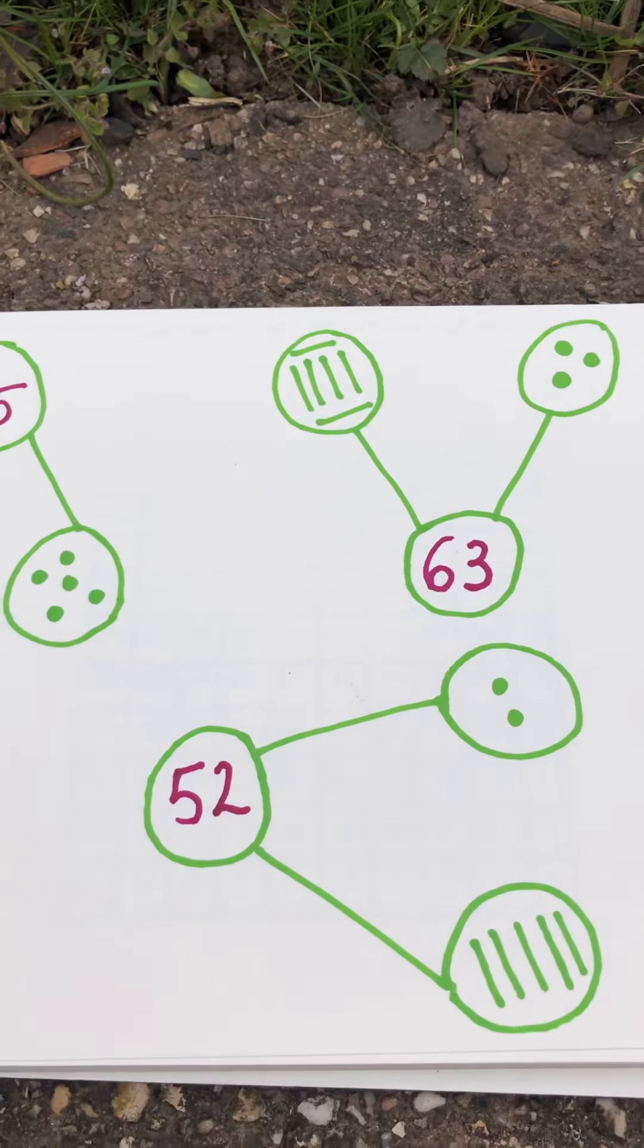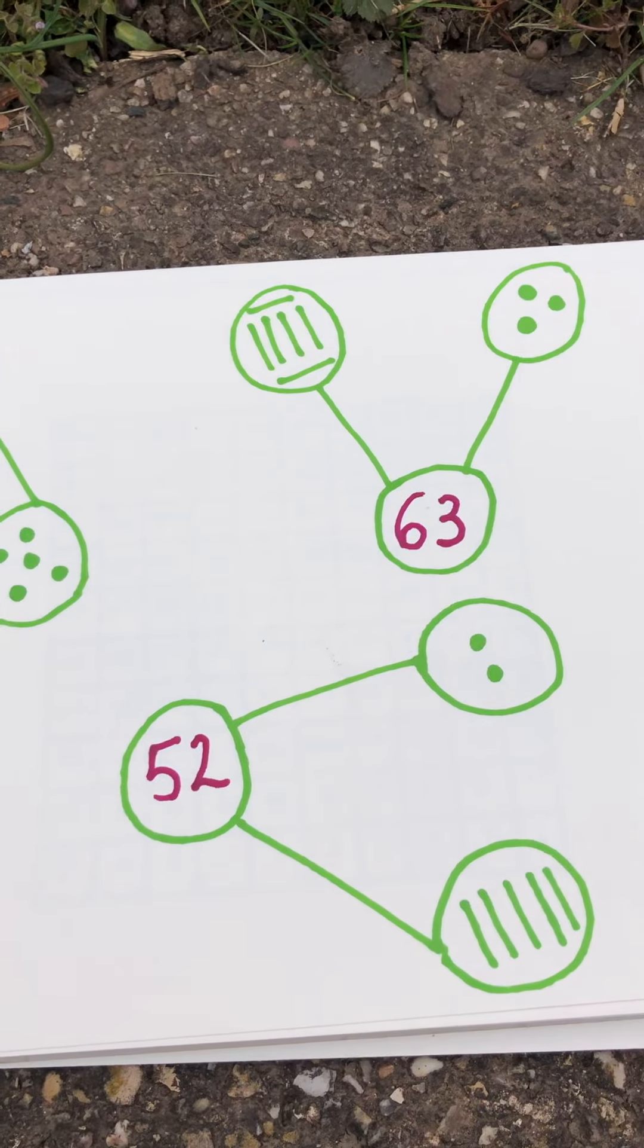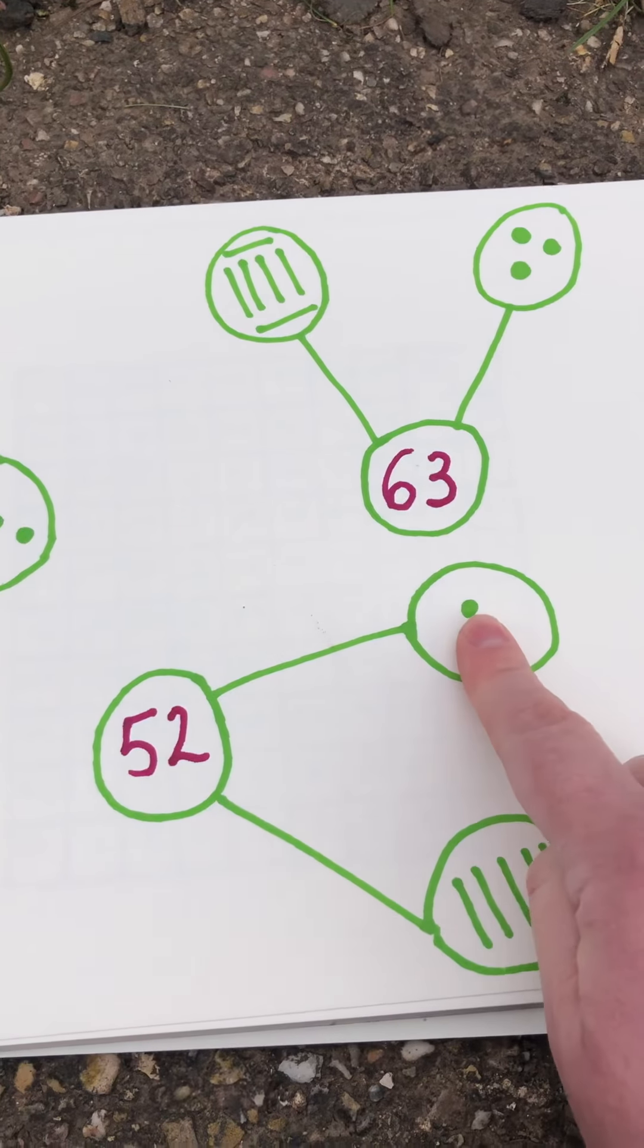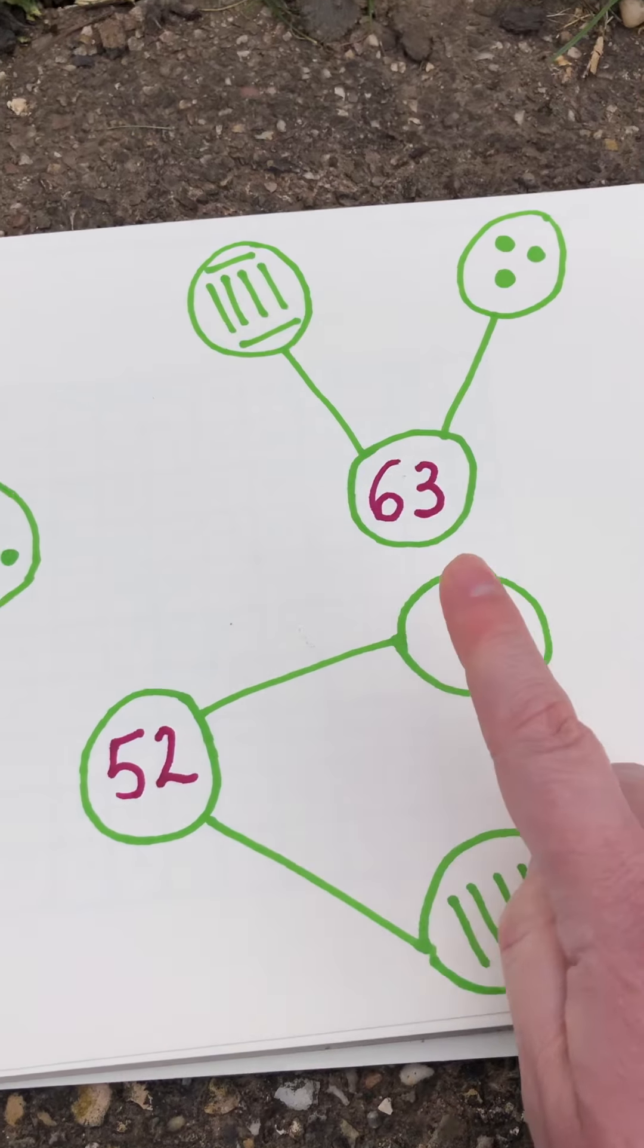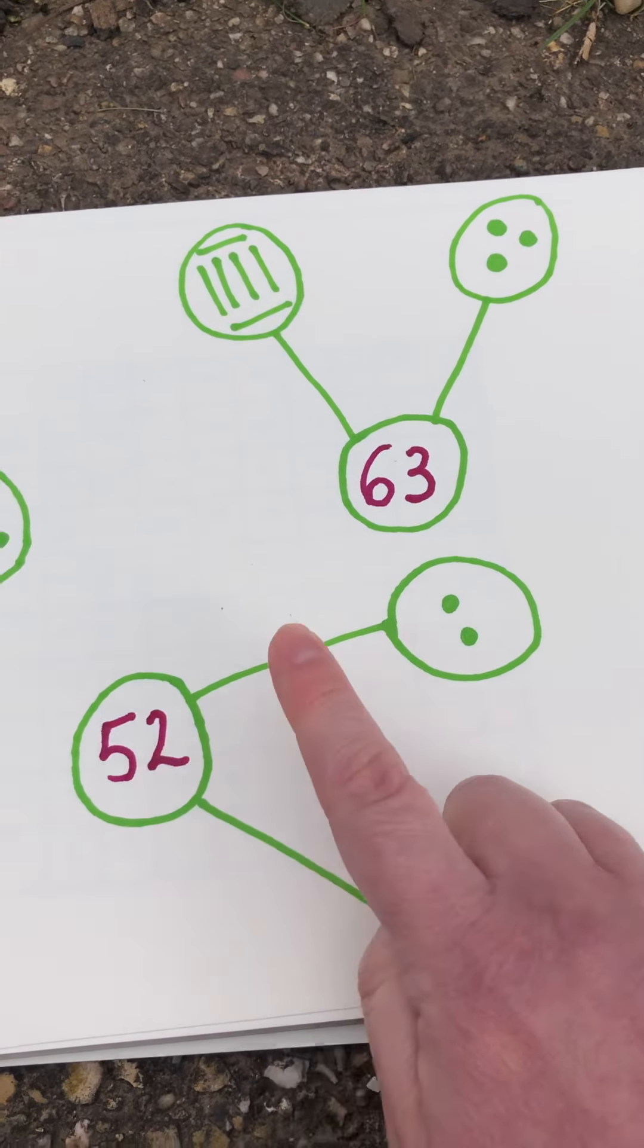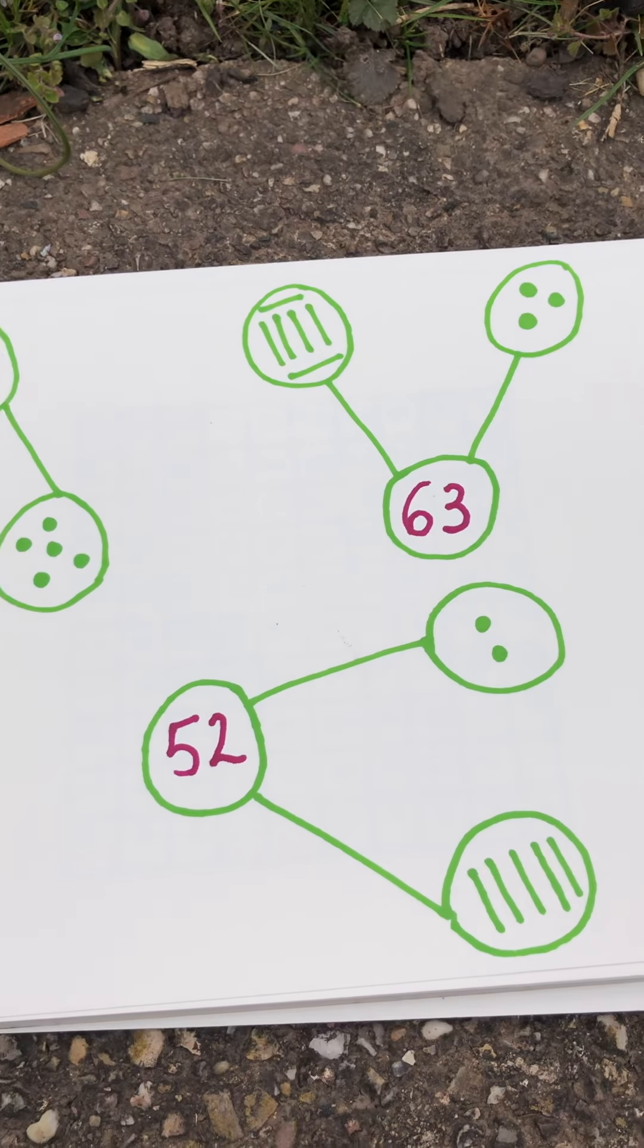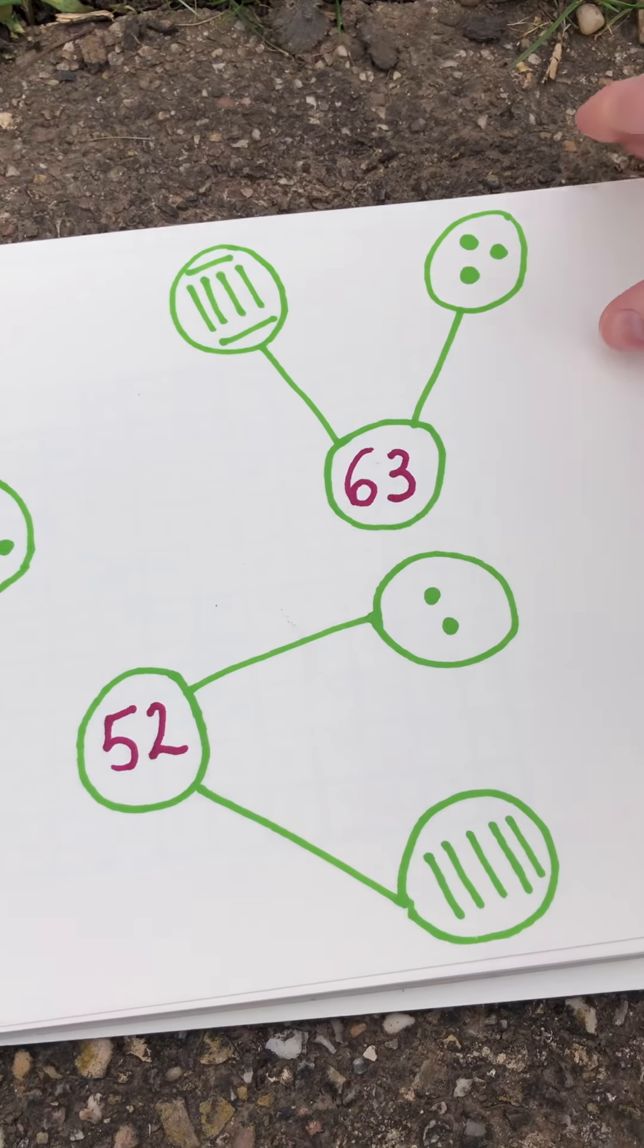Ask your grown-up to make some for you, to challenge you. You could either do them this way, where your grown-up draws the rods and the 1's. Or you can ask your grown-up to write the number, and then you can do the rods and 1's. I look forward to hearing how you get on. Have lots of fun. Bye for now.